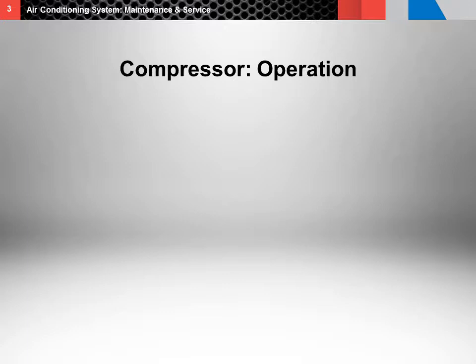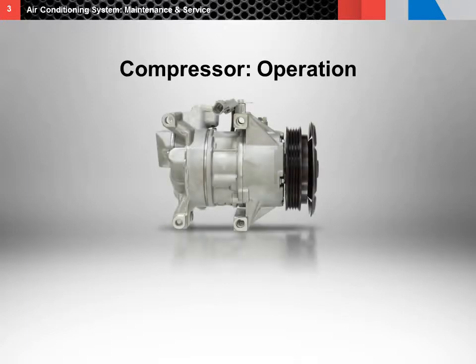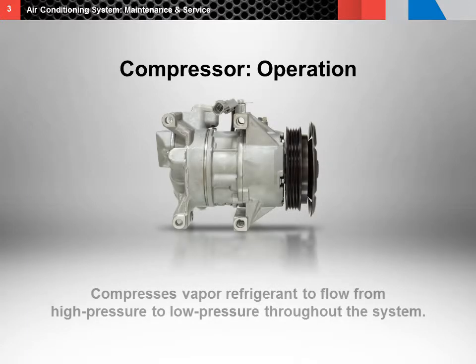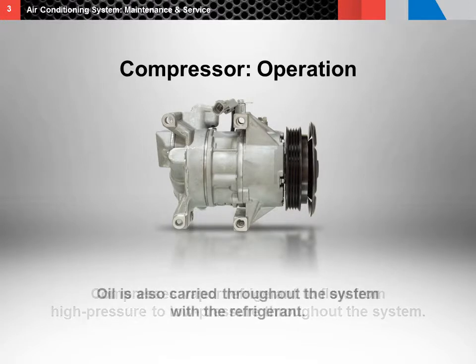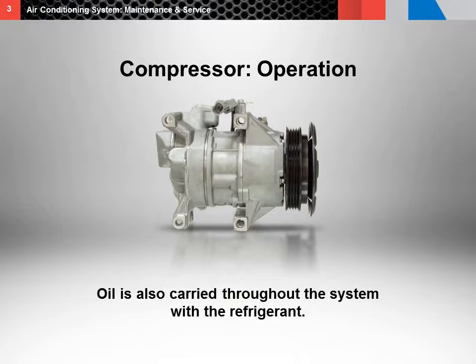Let's start with the compressor. The compressor compresses vapor refrigerant so it flows from high pressure to low pressure throughout the system. The oil, which provides lubrication for the compressor, is also carried throughout the system with the refrigerant.